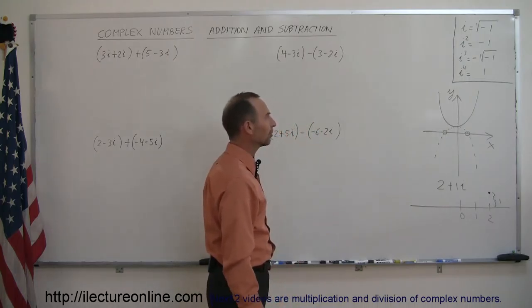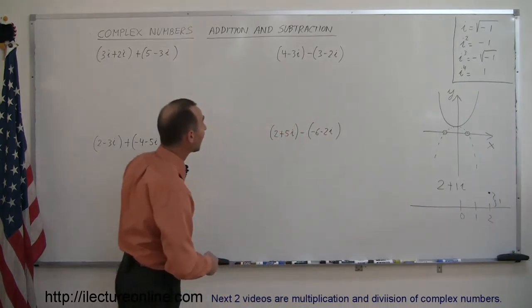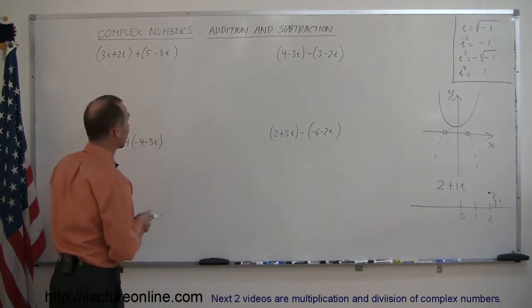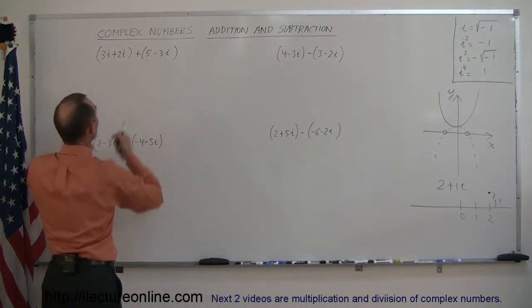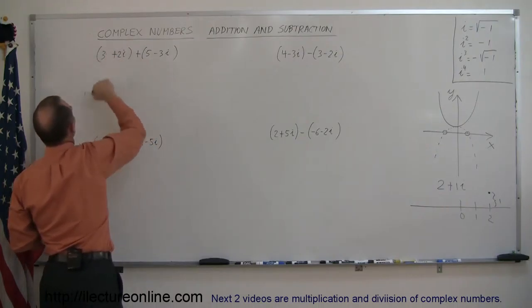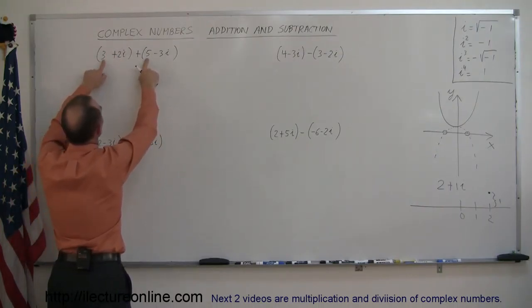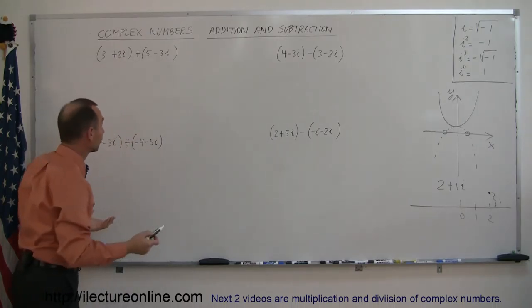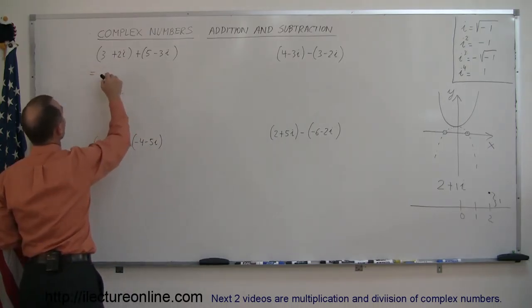So without further ado, let's see how to add and subtract these. It's a simple rule actually. When you add two complex numbers together, you're going to add the real parts together and then you're going to add the imaginary parts together. Simple algebraic addition.